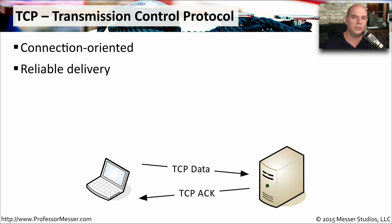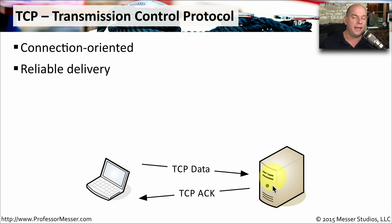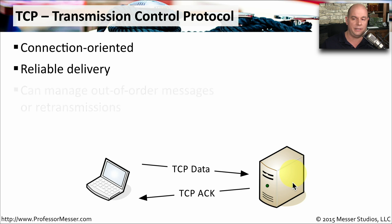TCP is also considered reliable delivery. That's because when you send information to a second station, it responds back with an acknowledgment. You'll send some TCP data, and that device will acknowledge that it received the information. That way, the originating station can be assured that the remote device received everything that was sent.